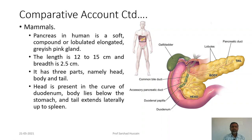In mammals, taking the example of human beings: the pancreas is a soft, compound, lobulated, elongated, grayish-pink gland. Its length is about 12 to 15 centimeters and its width is about 2.5 centimeters. It has three parts — the head, the body, and the tail. The head is present in the curvature of the duodenum, the body lies below the stomach, and the tail extends laterally up to the spleen.